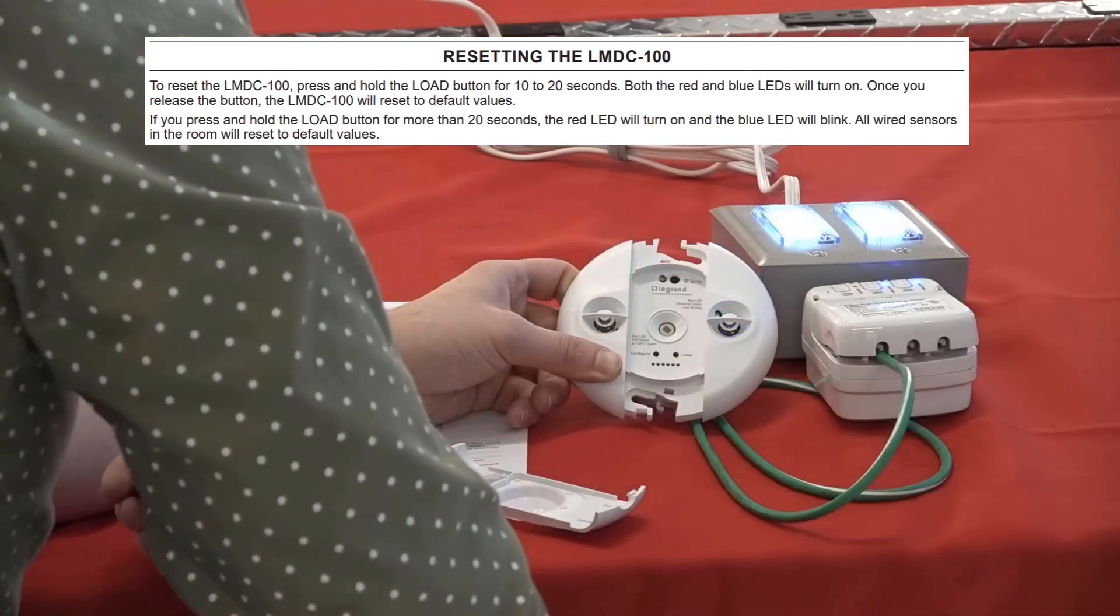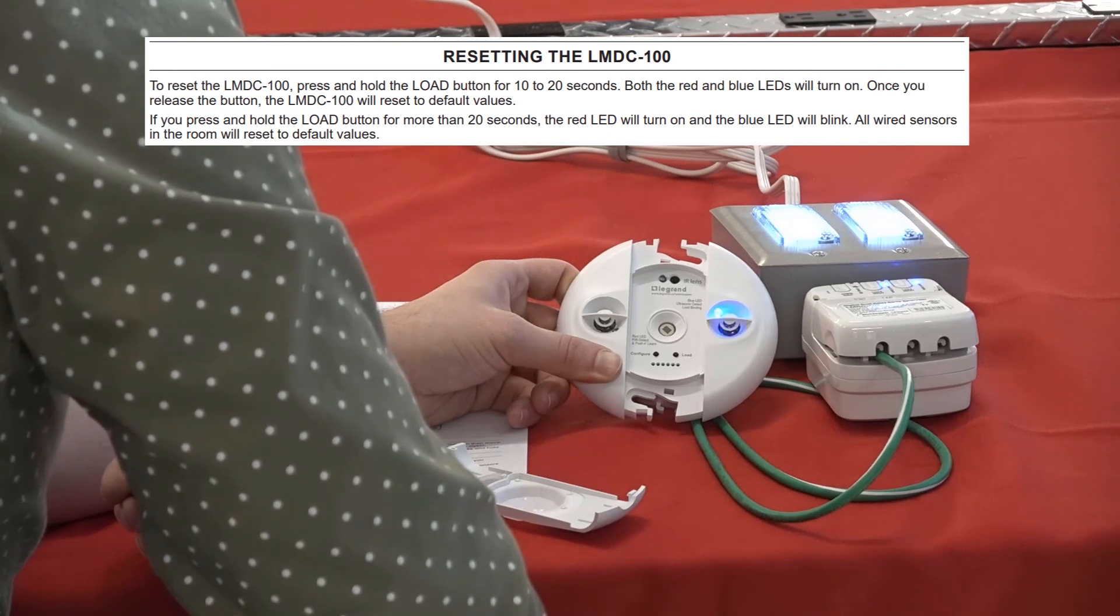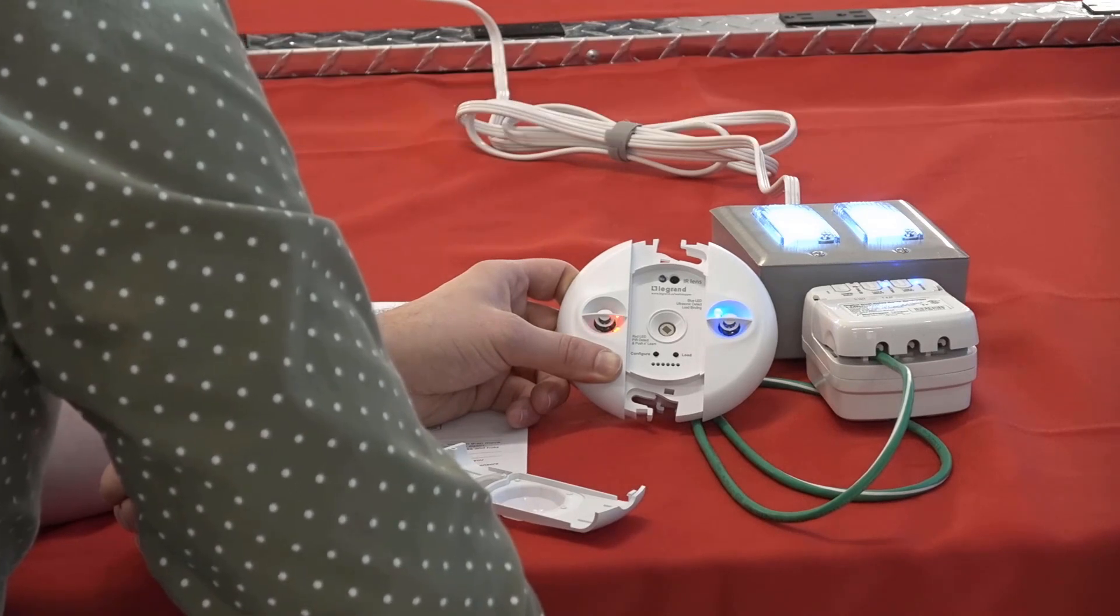The second reset will allow you to reset all sensors in the room. You do this by pressing and holding the load button for over twenty seconds after which the blue LED will flash.